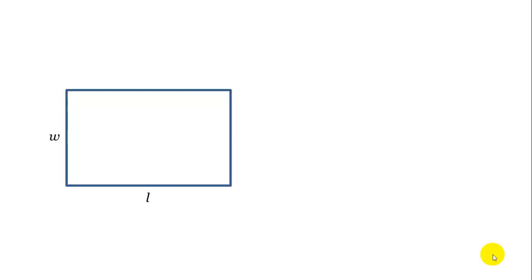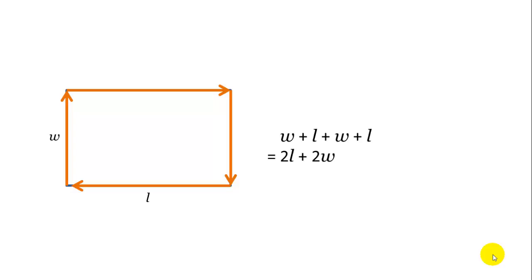Now in a rectangle, we have two different length sides: W for width and L for length. So if we want to walk around this rectangle, we're going to walk length W, length L once, length W again, and length L a second time. So the perimeter, or the distance around the rectangle, is going to be 2L plus 2W.